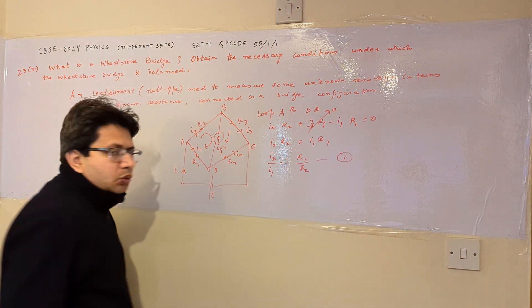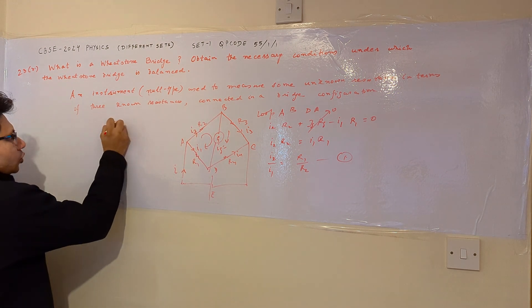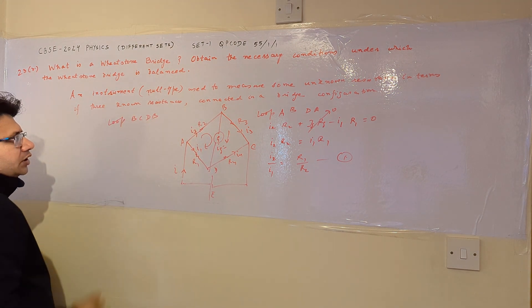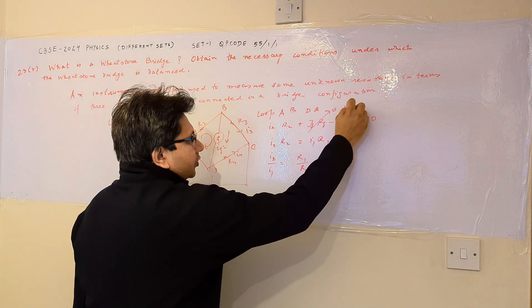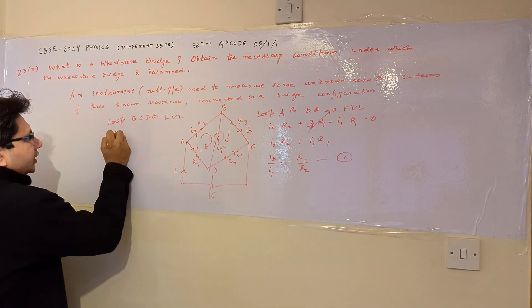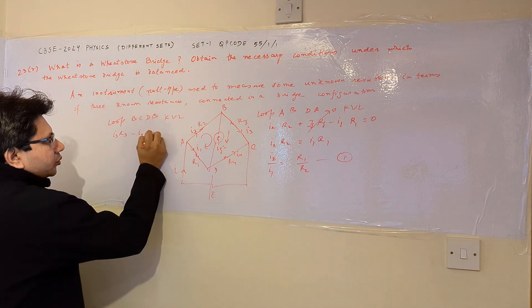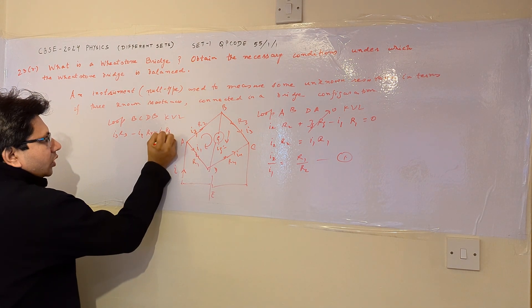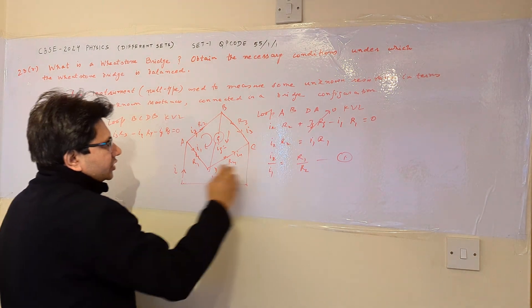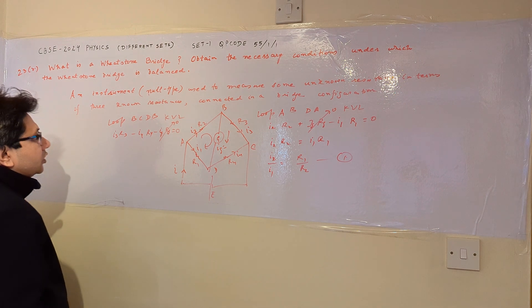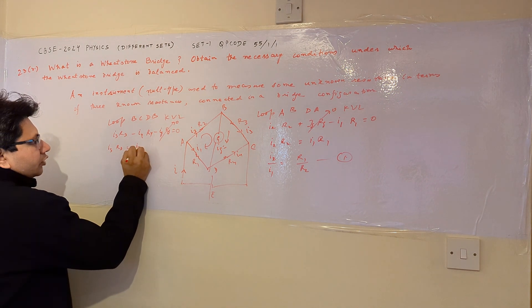This is our equation number one. Similarly, for the loop BCDB, we can apply KVL as we have applied here. So according to KVL, I3 R3, then minus I4 R4, then minus ig into Rg is equal to zero. Now as we have done in the previous case, ig is equal to zero. So it means this term is zero. And we can see that I3 R3 is equal to I4 R4.